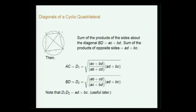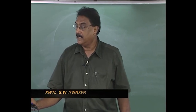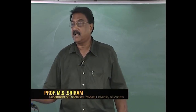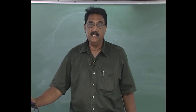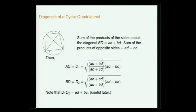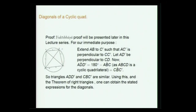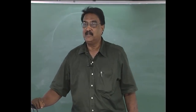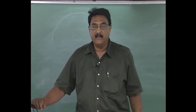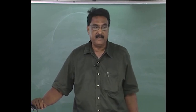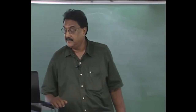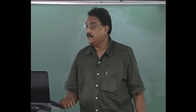This is the first time the diagonals of a cyclic quadrilateral individually have been given; this was discovered much later, around the 17th century, in Europe. Earlier they had only Ptolemy's result giving the product of the diagonals, not the individual diagonals. So the individual diagonals are given by Brahmagupta for the first time. A proof must have existed, but he has not given it, nor does the commentary.